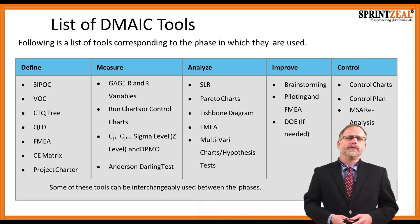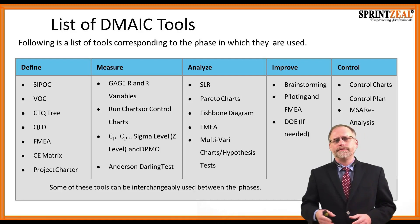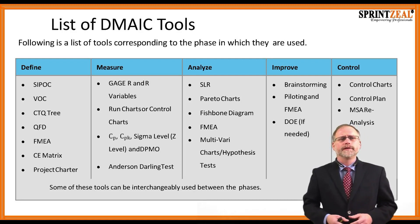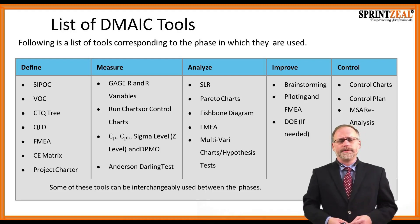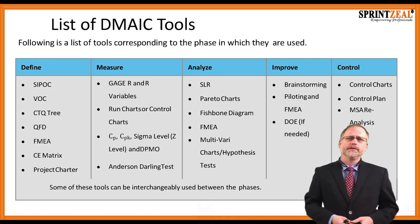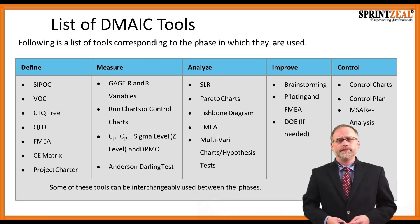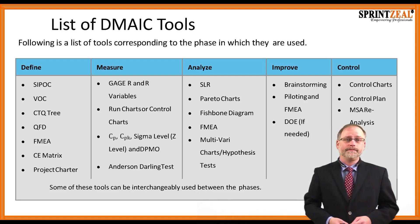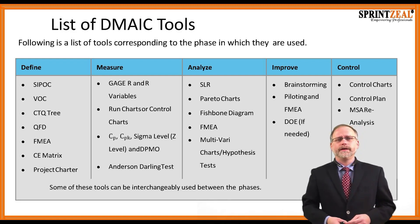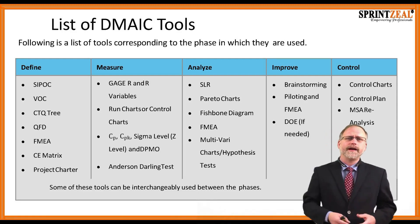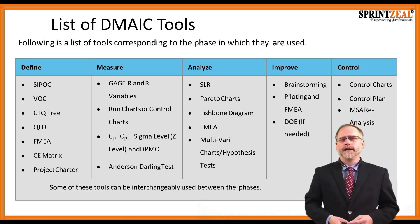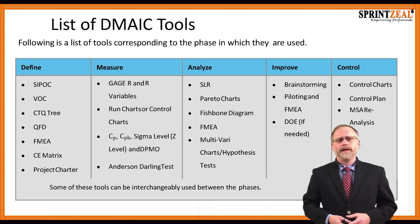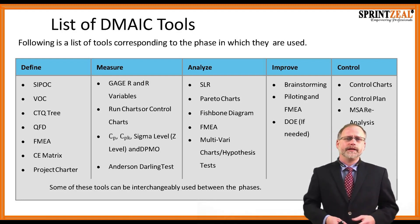In Analyze, we use SLR, Pareto charts, fishbone diagrams, FMEA, multi-variable charts, and hypothesis testing. In Improve, we look at brainstorming, piloting, FMEA again, and a DOE (design of experiments) if needed. In Control, we use control charts, a control plan, and an MSA re-analysis.